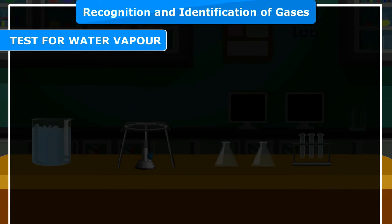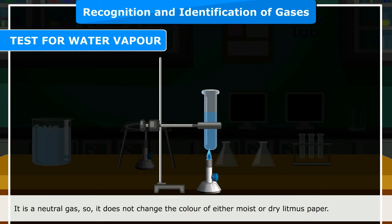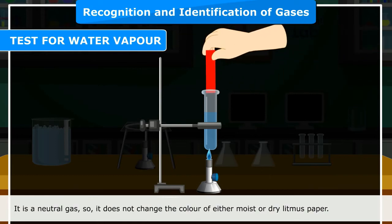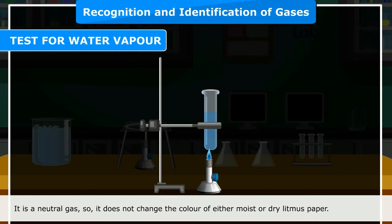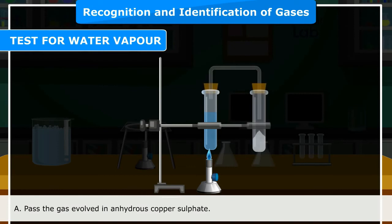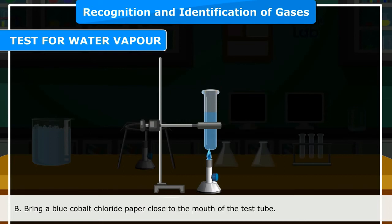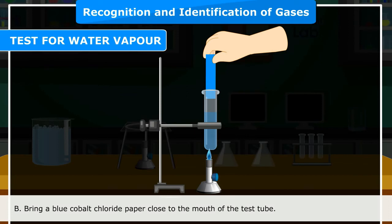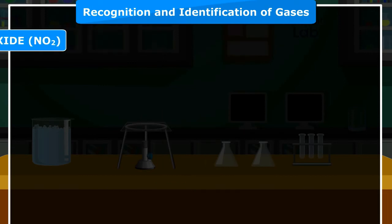Test for water vapor: Water vapor is a colorless and odorless gas. It is neutral and does not change the color of litmus paper. Confirmatory test A: Pass the gas through anhydrous copper sulfate — it turns from white to blue. Confirmatory test B: Bring blue cobalt chloride paper close to the mouth of the test tube — the paper turns pink. Both confirm that the gas is water vapor.